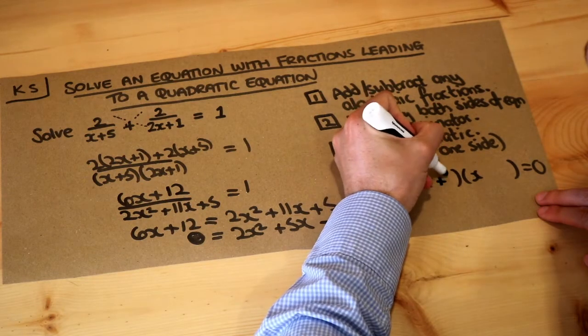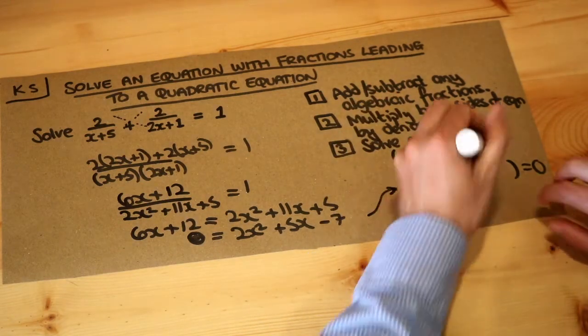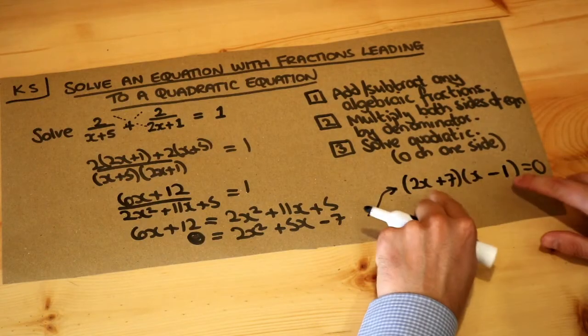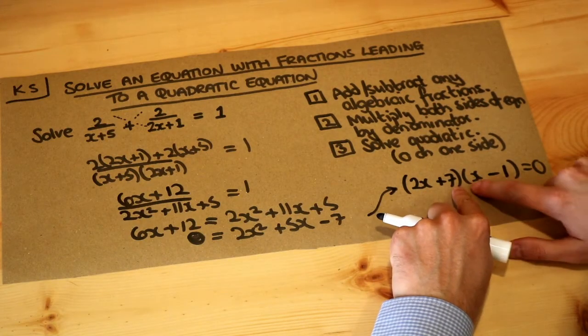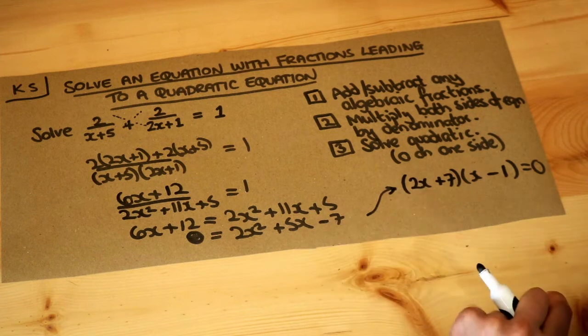If I make this +7, that gives you 7x, and if I make that -1, that gives you -2x. 7x minus 2x will be 5x, which is right.